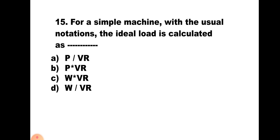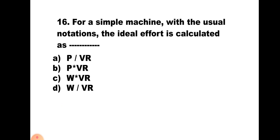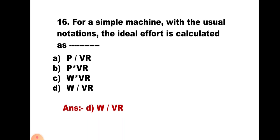Question number 15: For a simple machine with usual notation, the ideal effort is calculated as — A) P/VR, B) P × VR, C) W/VR, D) W/VR. The ideal effort is calculated as W upon VR. Hence the correct answer is D) W upon VR.